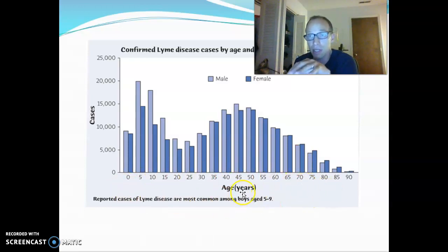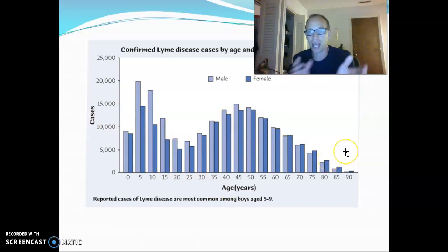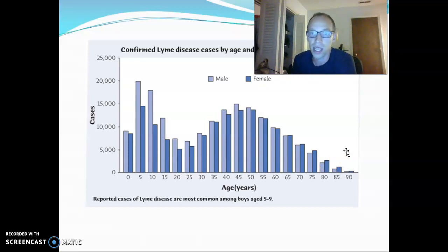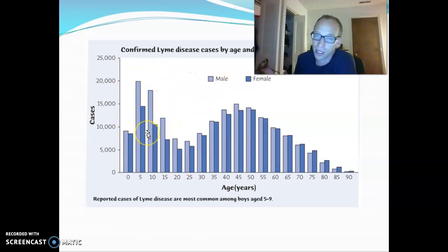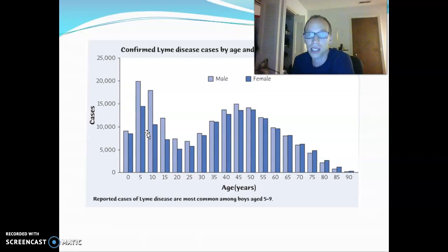The importance of it being a histogram versus a bar chart is that if we see patterns moving from left to right, that is a legitimate pattern — it's not just how the bars happen to be arranged, like in the chart we saw with music sources. So this tells us something: the age groups that are really at risk for Lyme disease are children, especially male children, and this was 2001 to 2010.